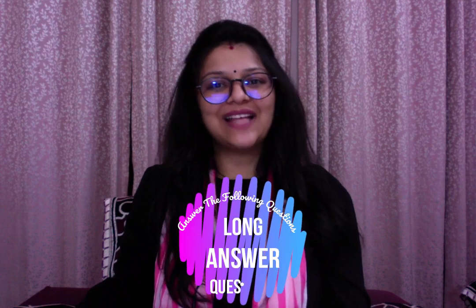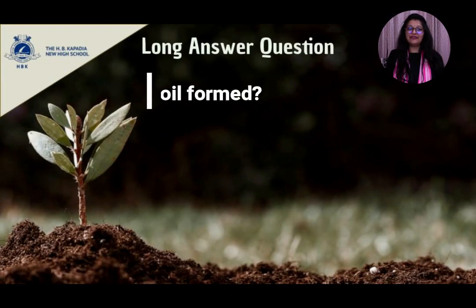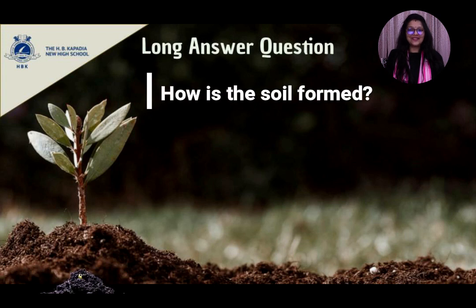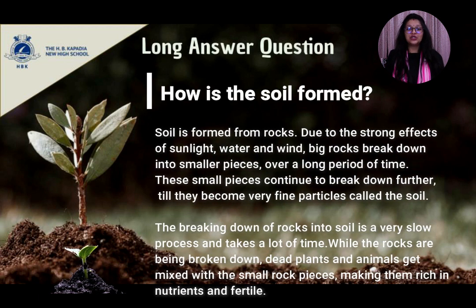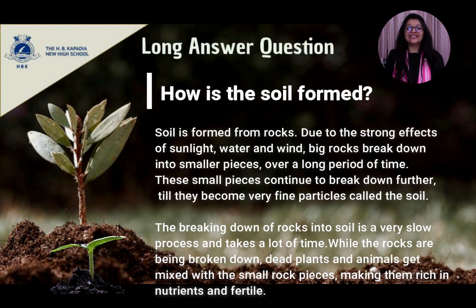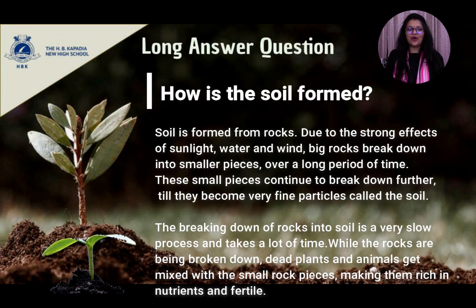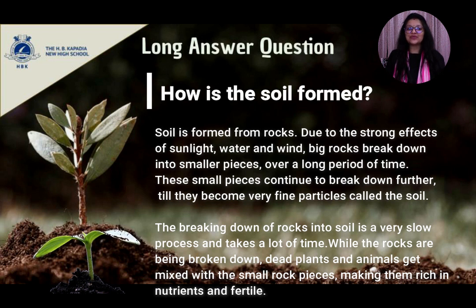Long answer questions. First: how is soil formed? Answer: soil is formed from rocks. Due to the strong effects of sunlight, water and wind, big rocks break down into smaller pieces of rocks over a long period of time. These small pieces continue to break down further till they become very fine particles called soil. The breaking down of rocks into soil is a very slow process and takes a lot of time. While the rocks are being broken down, dead plants and animals get mixed with the small rock pieces, making them rich in nutrients and fertile.